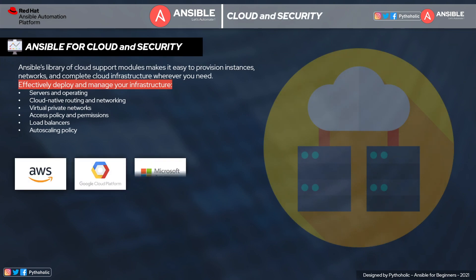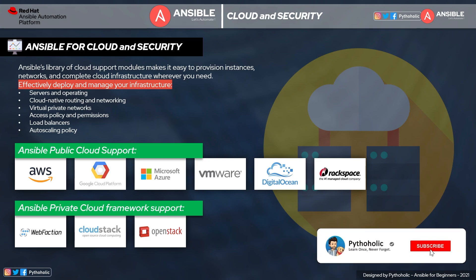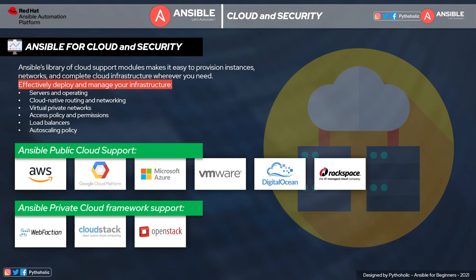Now, let's come to something people are really interested in — Ansible for the cloud. Ansible has core libraries that provide a base to easily provision instances, networks, and complete cloud infrastructure wherever you need. With Ansible, you can deploy and manage infrastructure such as servers, cloud-native routing and networking, virtual private networks, access policies and permissions, load balancers, auto-scaling policies, and much more. We get support for widely used public cloud platforms like AWS, GCP, Azure, VMware, DigitalOcean, and Rackspace. For private cloud, we have support for WebFaction, CloudStack, and OpenStack as well.